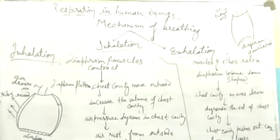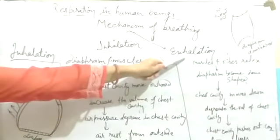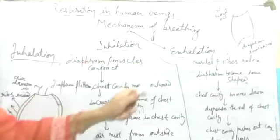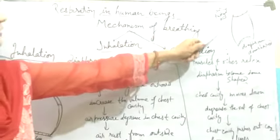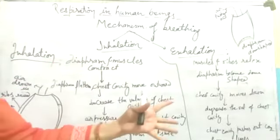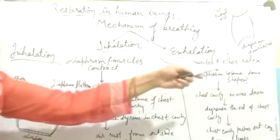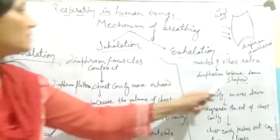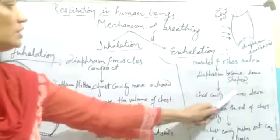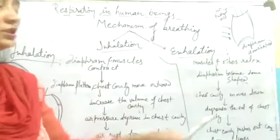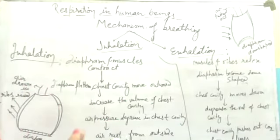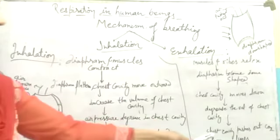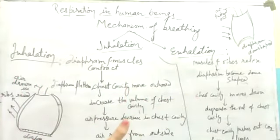During exhalation, the diaphragm and the muscles between the ribs are relaxed. As a consequence, the diaphragm becomes dome-shaped. The diaphragm becomes dome-shaped and the chest cavity moves downward, and as a result the volume of the chest cavity will decrease.